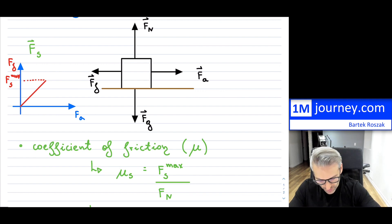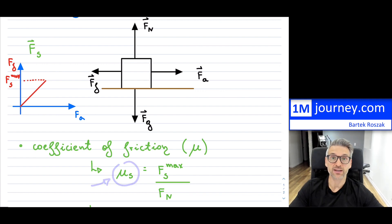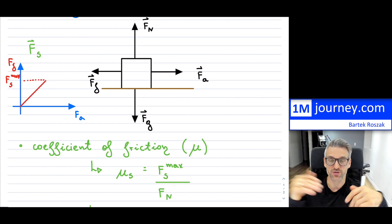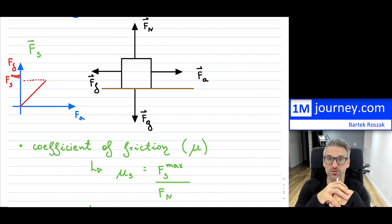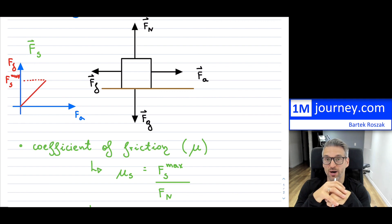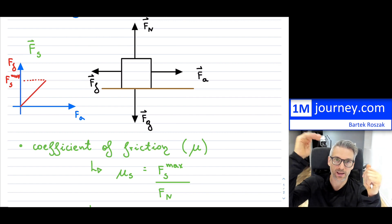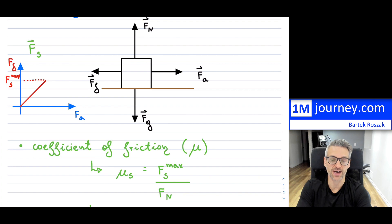We define this coefficient of friction as a ratio — a division between the maximum static friction force and the force of normal for that object. This coefficient will be different for many materials. So depending on which surfaces you have — wood, aluminum, steel, rubber — the maximum force of friction is going to be different. Therefore, for any object, even if the force of normal is the same, a different surface material will give a different maximum and thus a different coefficient of friction.